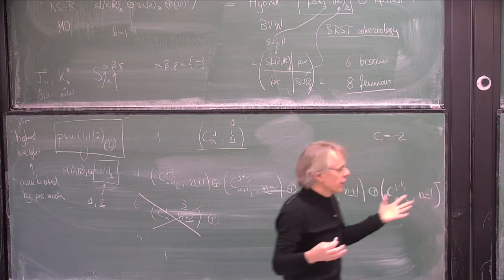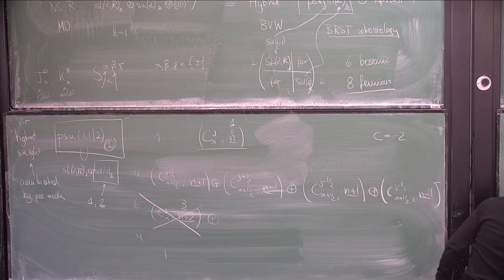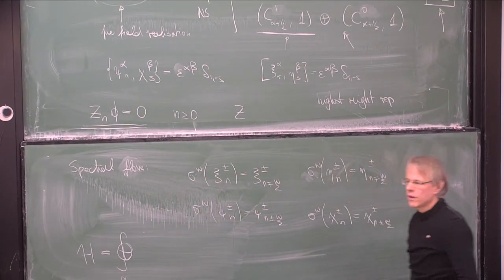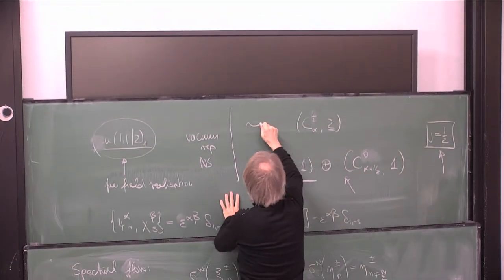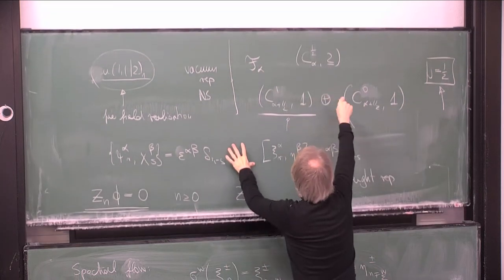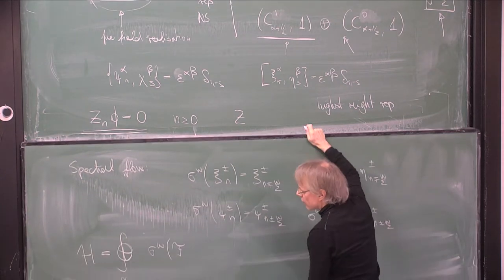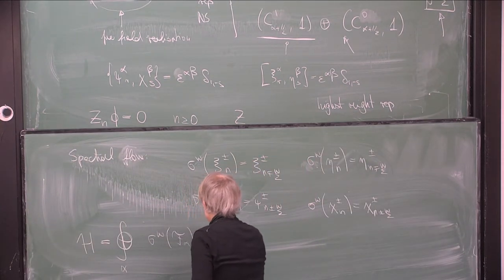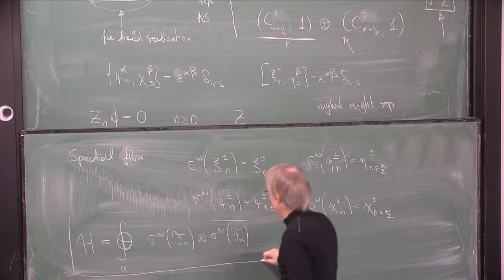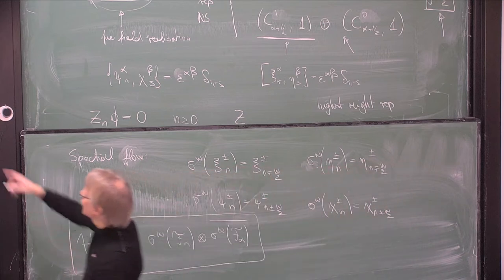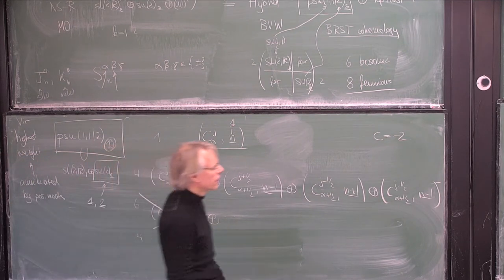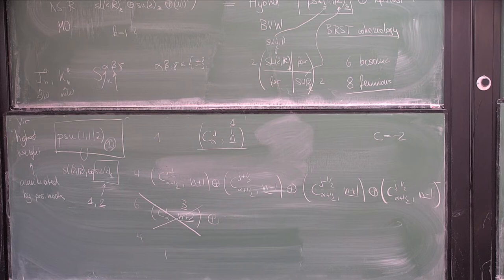The space of states of this conformal field theory is a sum — honestly still an integral because the alpha parameter is arbitrary. You integrate over alpha and have the representation F_alpha, which is the affine representation whose ground states are described by the short representation of the zero modes; and then you have the spectrally flowed sectors sigma_w applied to F_alpha. That is the full space of states of the PSU(1,1|2) part, to which you add the topologically twisted T4 sector — a very concretely defined theory with everything in terms of free fields.